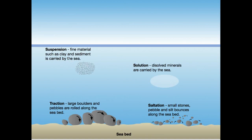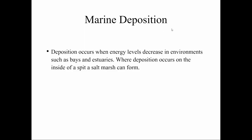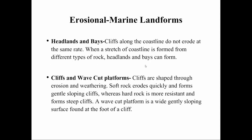Suspension is when fine material such as clay and sediments is carried by the sea. Traction means large boulders and pebbles are rolled along the seabed. Marine deposition occurs when energy levels decrease in environments such as bays and estuaries. Where deposition occurs on the inside of a spit, a salt marsh can form. Simply put, when sea wave energy decreases, deposition occurs.